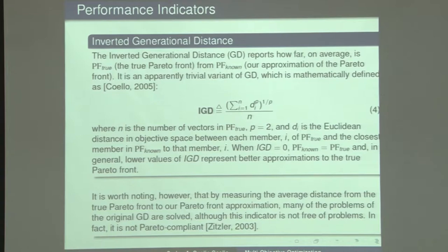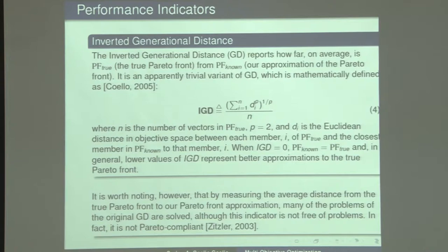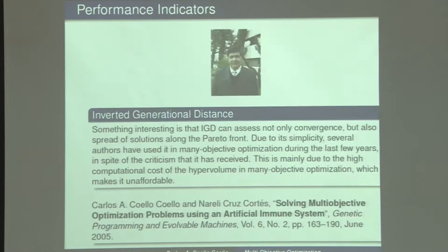Same as GD, if you get zero or a very small IGD value, your approximation is very good; the higher the IGD value, the worse. When comparing algorithms, whoever has lower IGD values is better. It's a very inexpensive indicator. IGD was used for the first time in 2004 in a conference paper, but the formal definition was provided in 2005. IGD can assess not only convergence but also spread, and it has been used a lot in many-objective optimization.